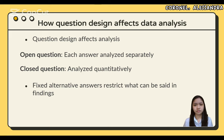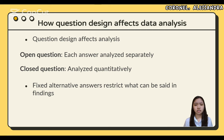Closed-ended questions are best for collecting data on categorical or quantitative variables. Open-ended questions allow respondents to give answers in their own words. Because there are no restrictions on their choices, respondents can answer in ways that researchers may not have considered otherwise. Open-ended questions have a few downsides: they require more time and effort from respondents, which may deter them from completing the questionnaire. For researchers, understanding and summarizing responses can take a lot of time and resources.